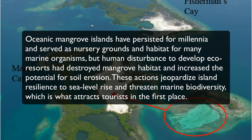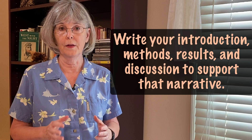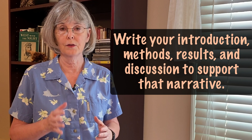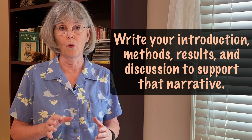Here's the story that emerged from these findings. Oceanic mangrove islands have persisted for millennia and served as nursery grounds and habitat for many marine organisms. But human disturbance to develop eco-resorts had destroyed mangrove habitat and increased the potential for soil erosion. These actions jeopardize island resilience to sea level rise and threaten marine biodiversity, which is what attracts tourists in the first place. Once you have your storyline, you will then write your introduction, methods, results, and discussion so that they support that narrative.